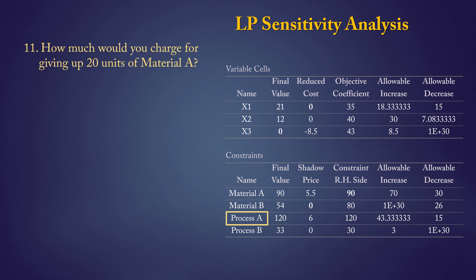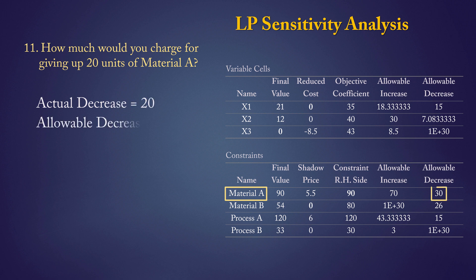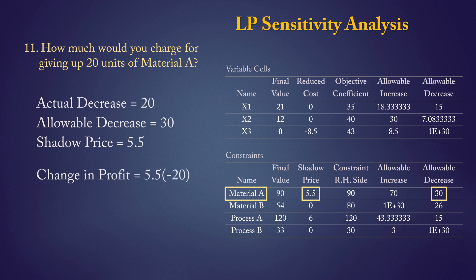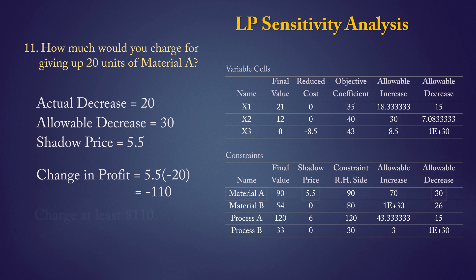Question 11: to determine how much to charge for giving up 20 units of material A, we consider the impact on profit. Giving away 20 units means decreasing the RHS by 20. The allowable decrease for material A is 30, which is greater than 20, so the shadow price of 5.5 applies. The change in profit is 5.5 times negative 20, a decrease of $110. Therefore, the charge should be at least $110 for giving away 20 units of material A.